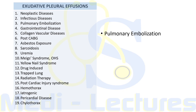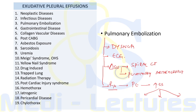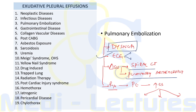Pulmonary embolization causing pleural effusion is often overlooked. The most common symptom is dyspnea. Pulmonary embolus can be suspected on ECG if it shows sinus tachycardia and S1Q3T3 pattern; diagnosis is confirmed with spiral CT scan or pulmonary arteriography. Treatment is to treat the pulmonary embolism, which causes the effusion to subside. If after treatment the effusion increases rather than decreases, this can suggest recurrent embolus, hemothorax due to treatment, or pleural infection.